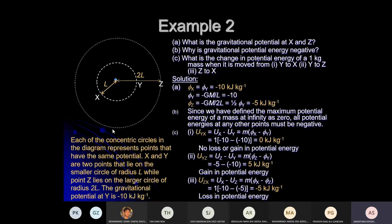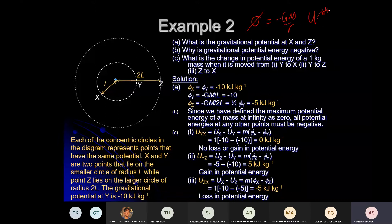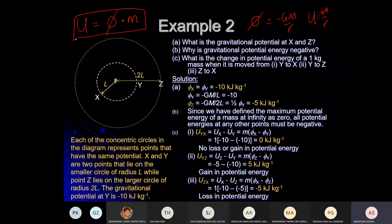Summary before the question: gravitational potential is –GM/r; gravitational potential energy is –GMm/r; gravitational potential energy equals gravitational potential multiplied by the test mass; and the change in gravitational potential energy equals MGH.